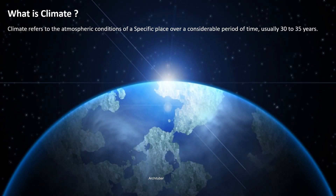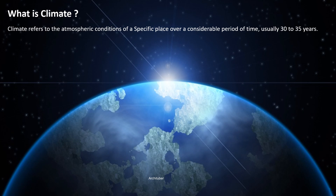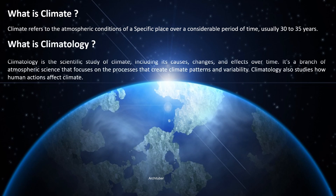So what is climate? Climate refers to the atmospheric conditions of a specific place over a considerable period of time — it usually refers to 30 to 35 years. Then, what is climatology? Climatology is the scientific study of climate including its causes, changes and effects over time. It is a branch of atmospheric science that focuses on the processes that create climatic patterns and variability.